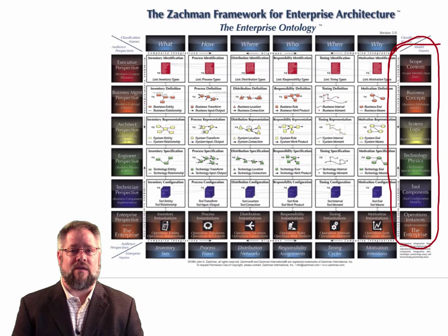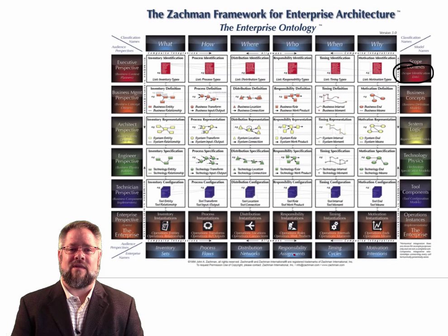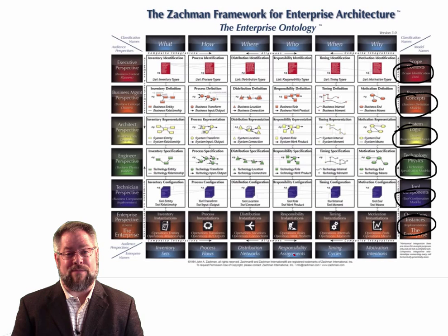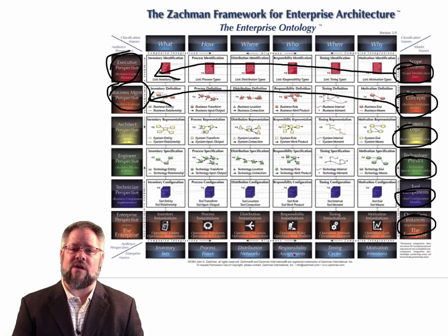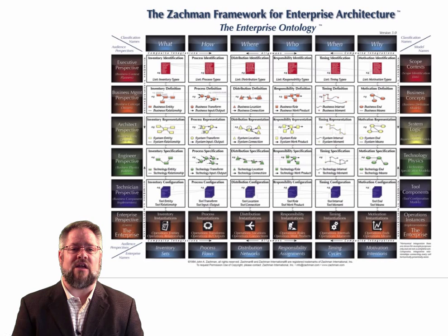For the framework, the six steps themselves are identification, definition, representation, specification, configuration, and implementation. Each step corresponds to an audience perspective on the left-hand side of the framework — identification to the executive perspective, definition to the business management perspective, and so on. The utility of this concept is that the information about the enterprise is transformed to help facilitate understanding about the enterprise between the different perspectives.